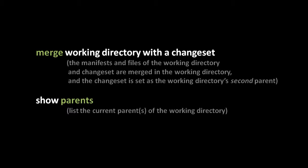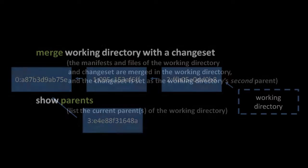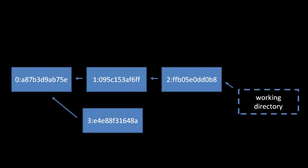When demonstrating a merge on the command line, we'll also use the parents command, which simply lists the current parent or parents of the working directory. First, let's consider this quick example. We have a repo with two heads, and generally what you want to do with separate heads is merge them together.